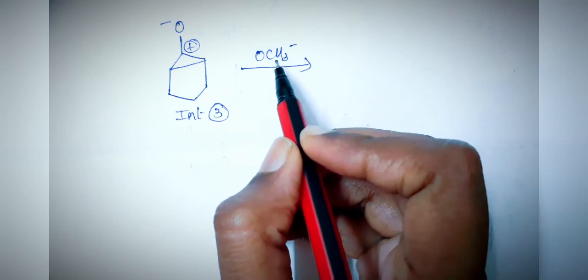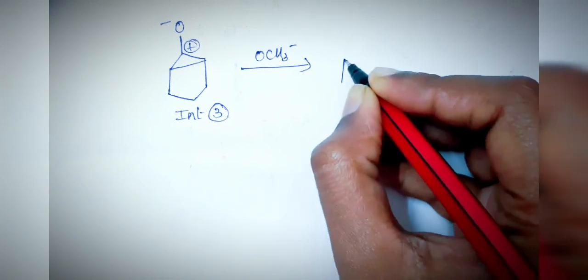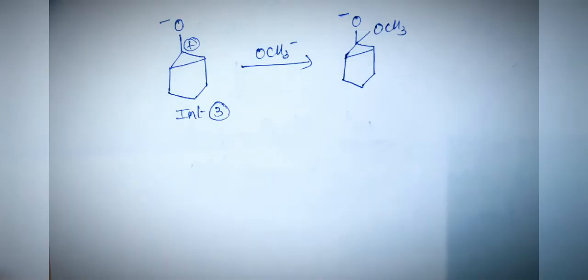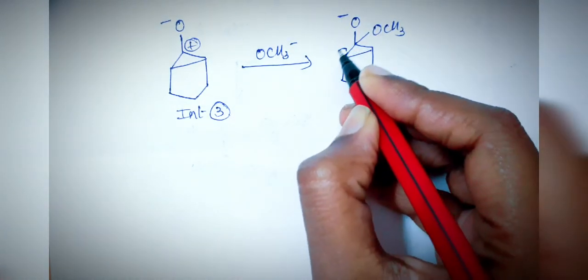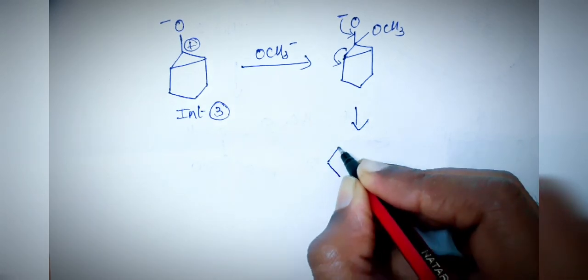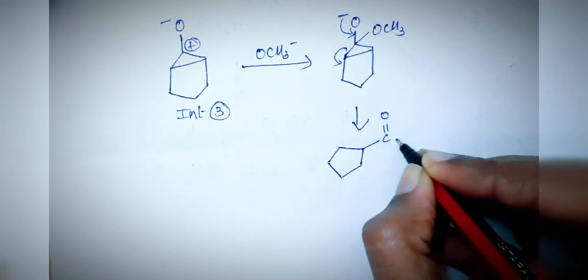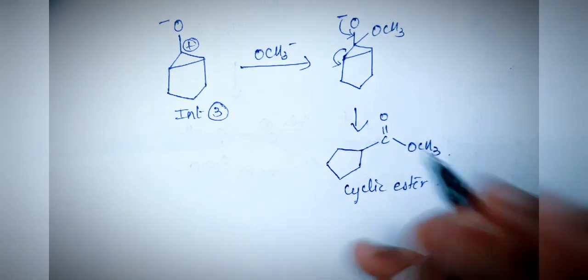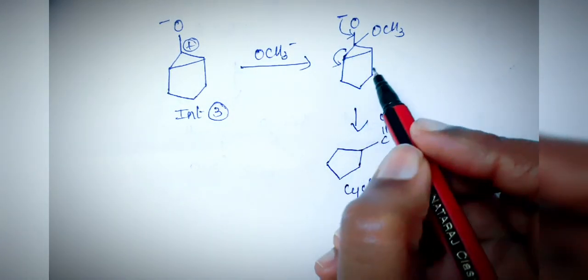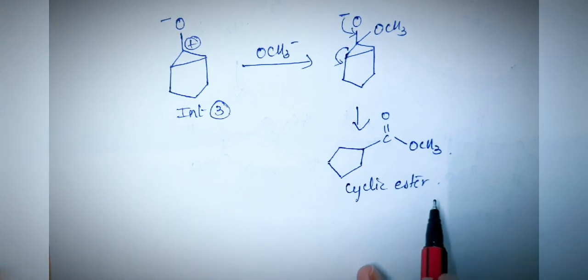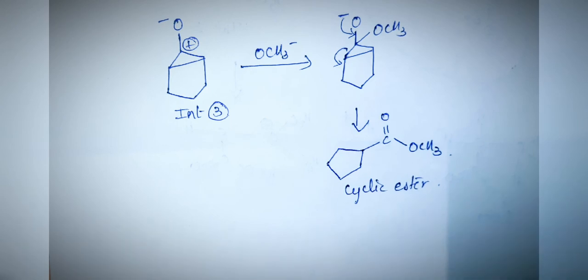After OCH₃⁻ attack, an O⁻ intermediate forms. This undergoes further electron/bond shifting to open the bicyclic ring and give a cyclic ester — the final product. The shifting occurs because of the extra bond between the two alpha carbons. This is how the Favorsky rearrangement proceeds for a reactant involving a cyclic ring structure.